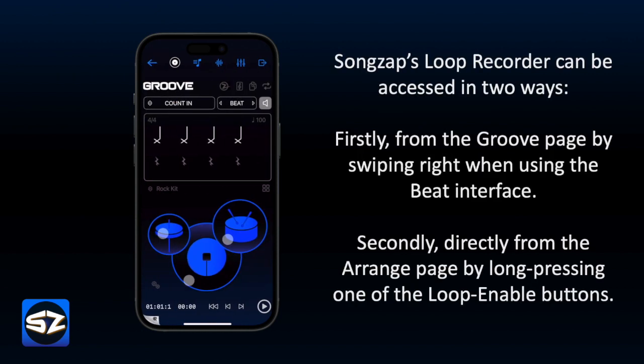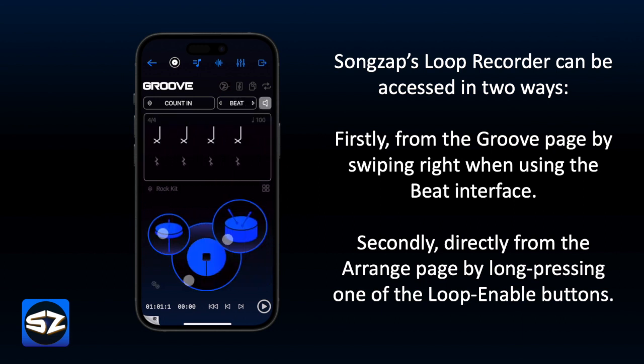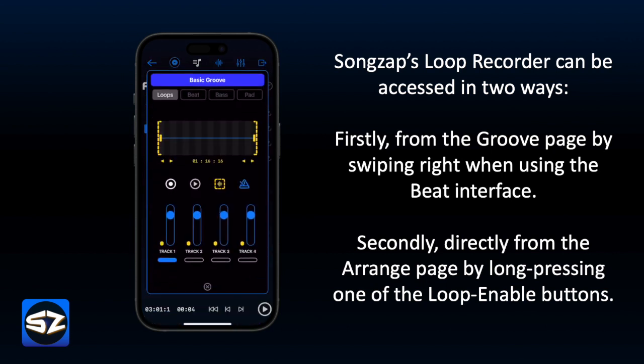Songzapp's Loop Recorder can be accessed in two ways. Firstly, from the Groove page by swiping right when using the Beat interface. Secondly, directly from the Arrange page by long pressing one of the Loop Enable buttons.